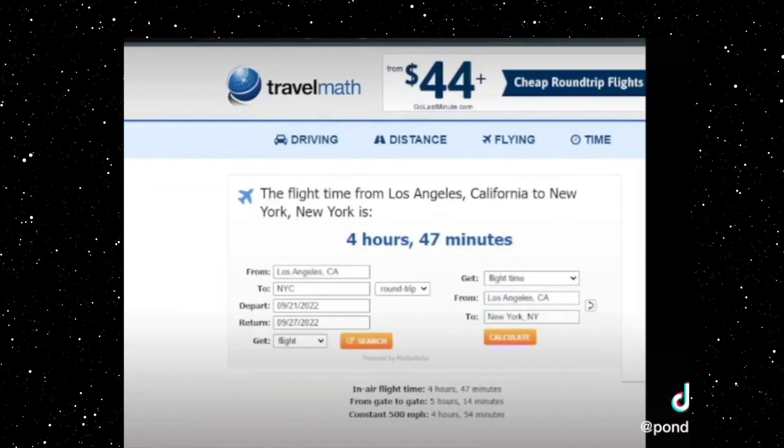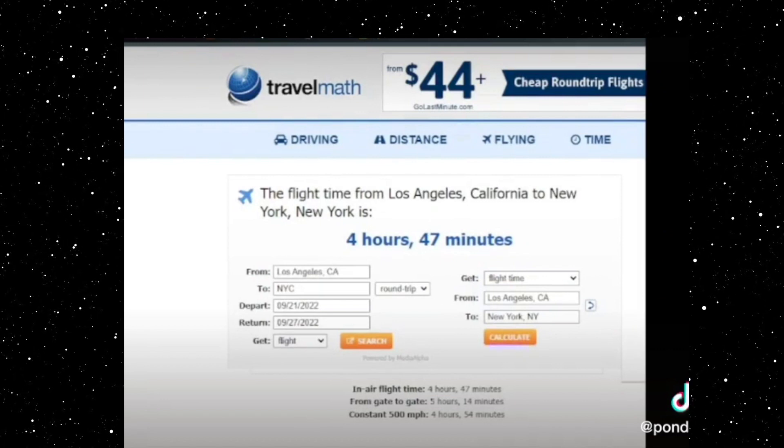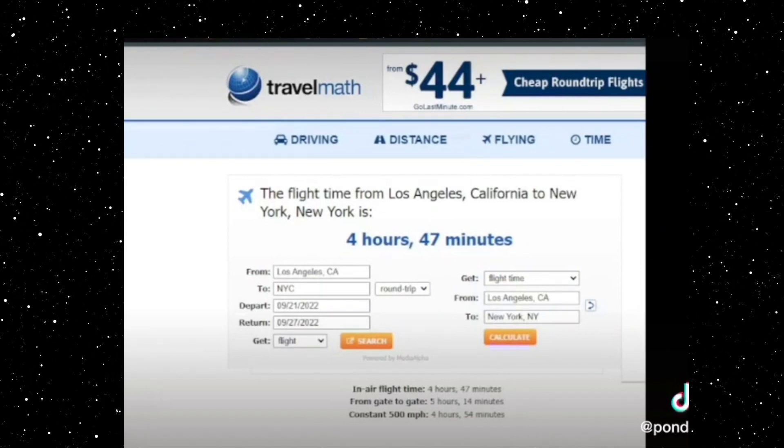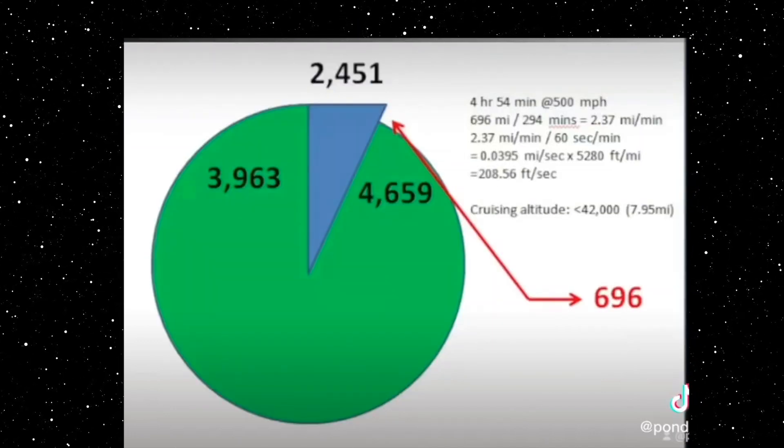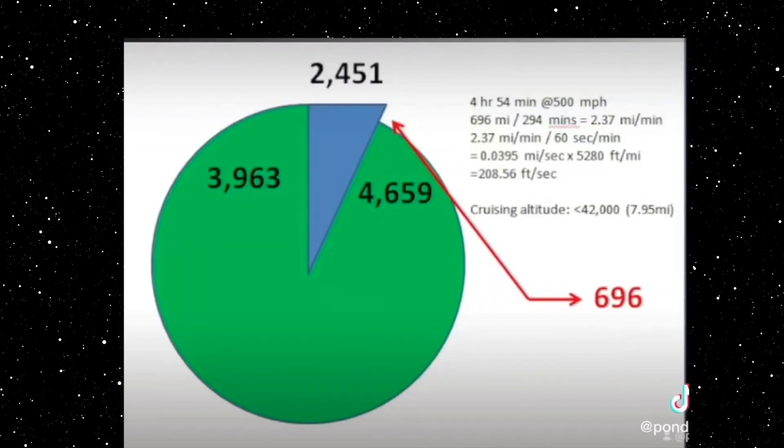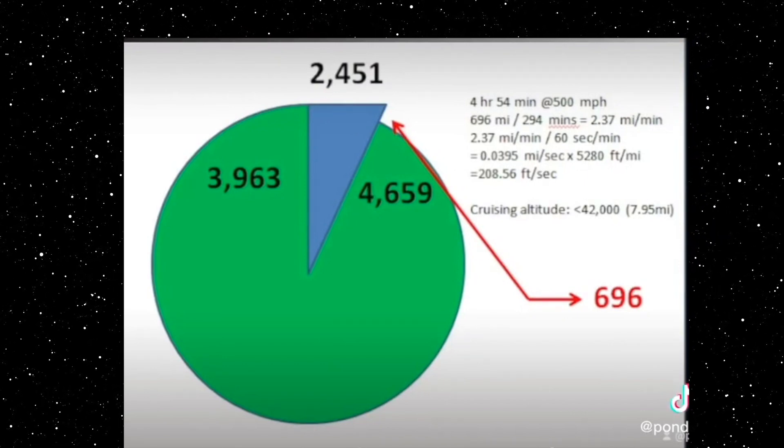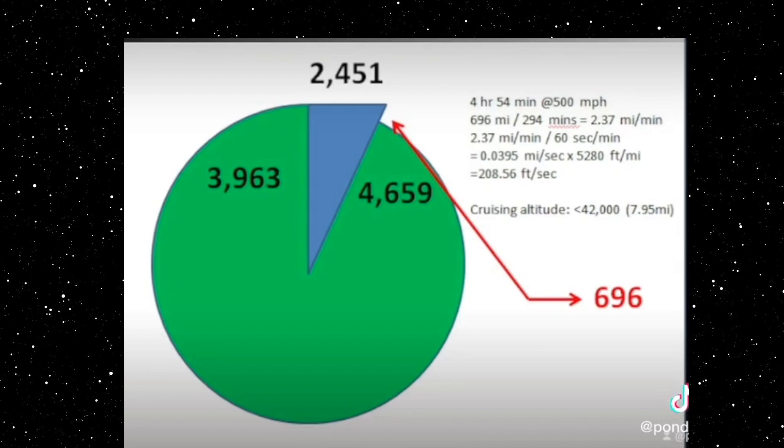From travelmath.com, four hours and fifty-four minutes at a constant five hundred miles an hour. So if we plug those numbers in to go six hundred ninety-six miles in four hours and fifty-four minutes, you'd have to descend.